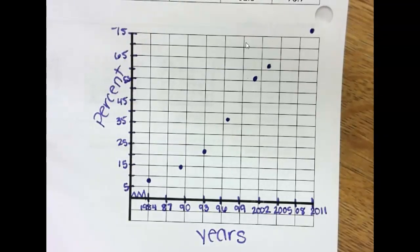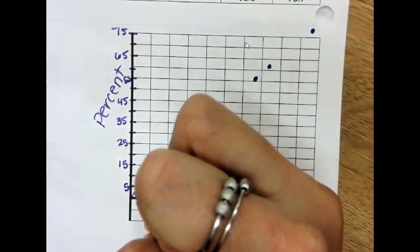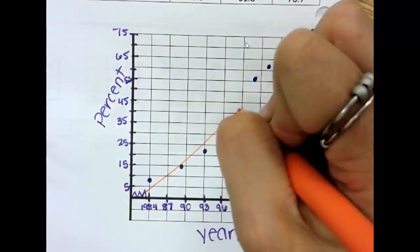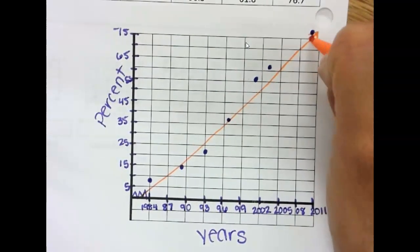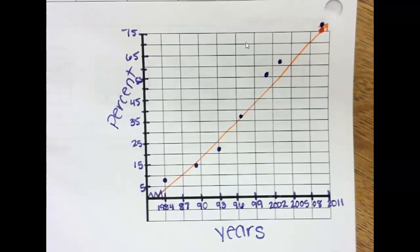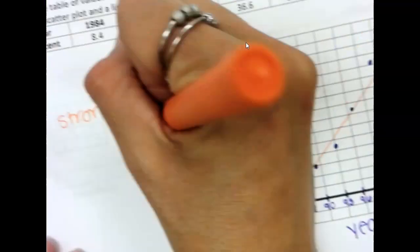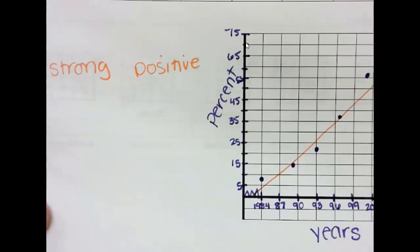So, once again, if I looked at this data, I would say it has a relatively positive relationship. Most of those points are pretty close to my line. So, it has a strong positive relationship. So, that describes the correlation of the data.